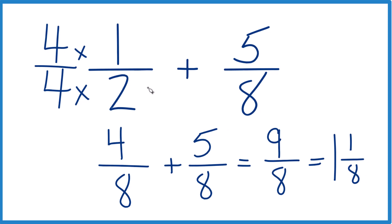So in answer to our question, one-half plus five-eighths equals nine-eighths. That's our improper fraction, or as a mixed number, one and one-eighth. This is Dr. B, and thanks for watching.